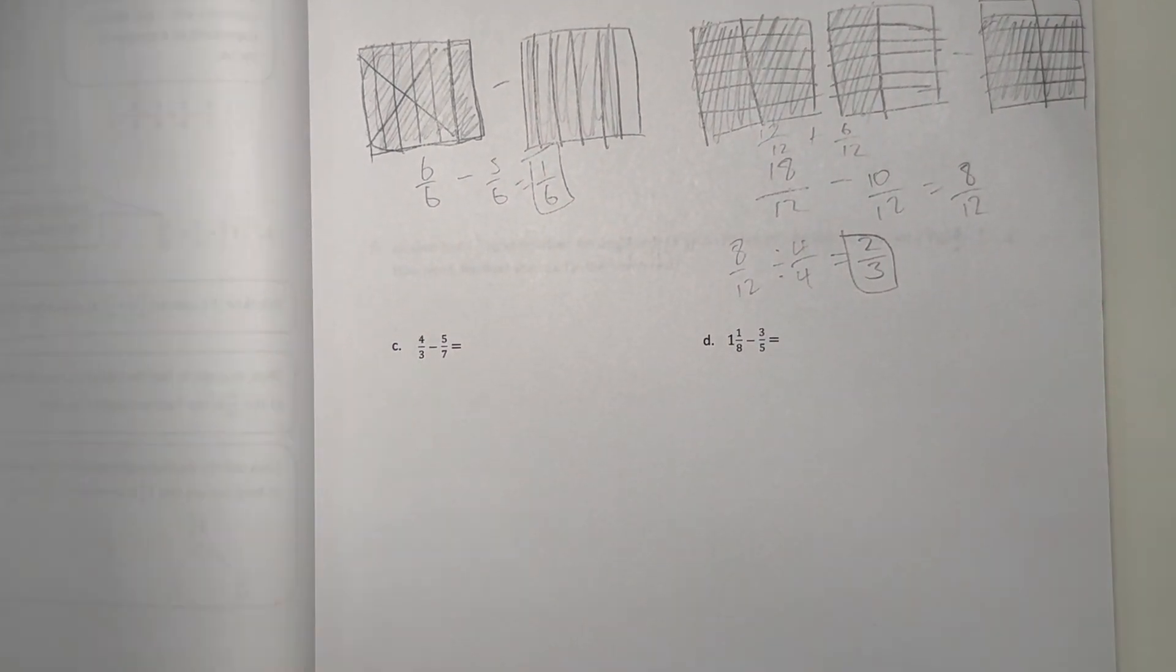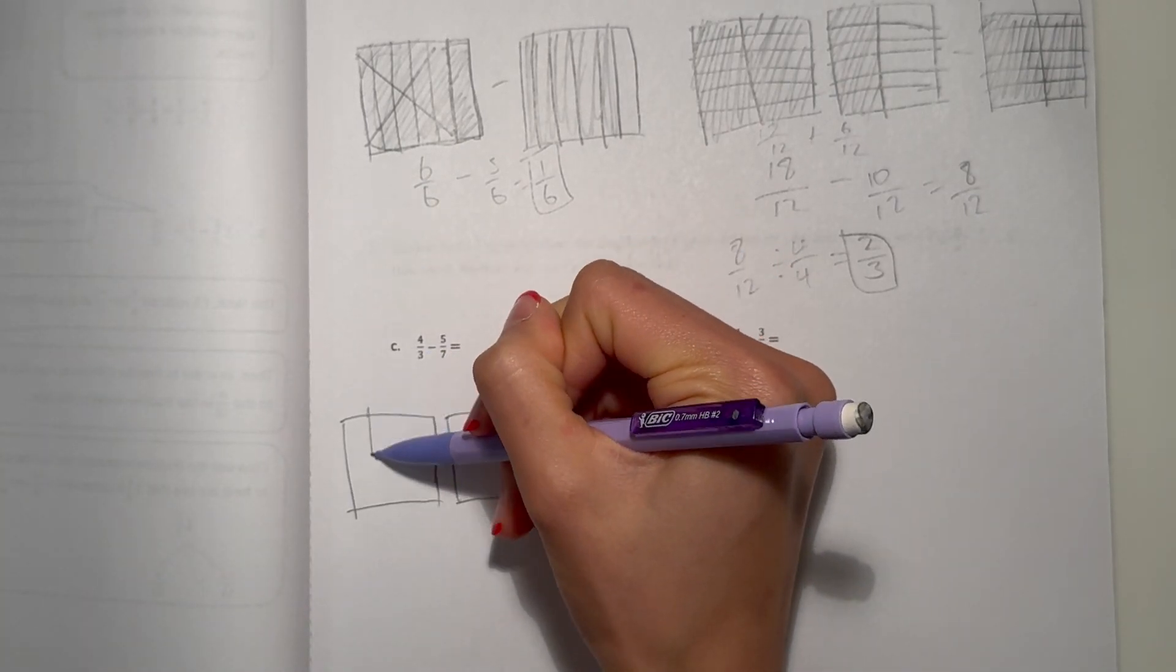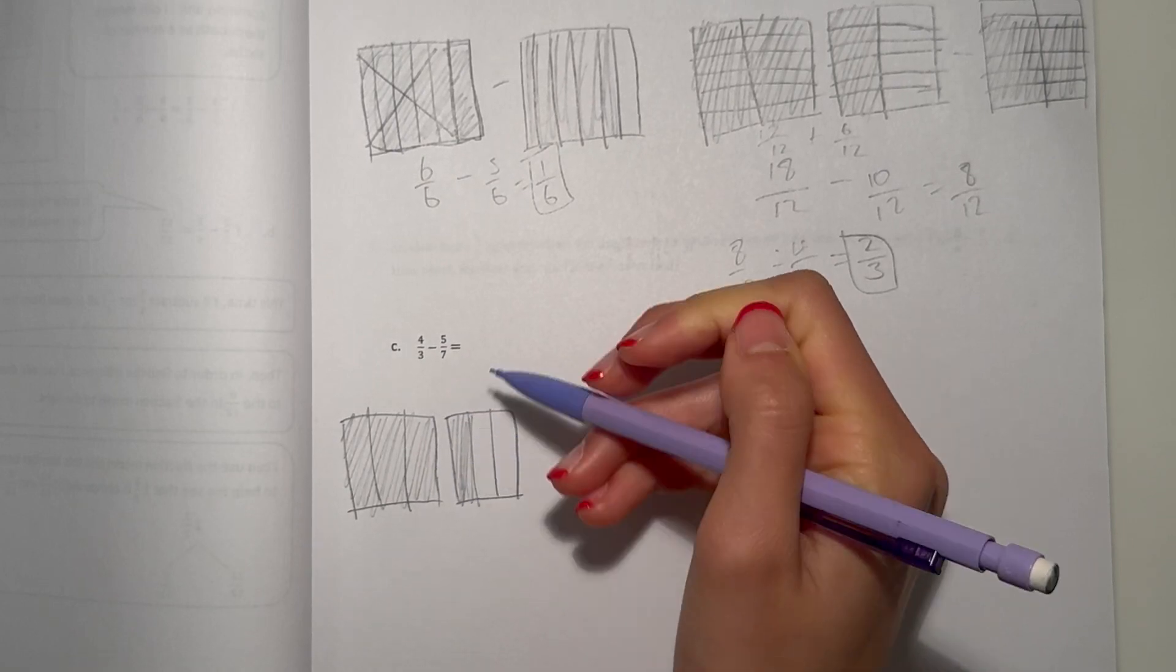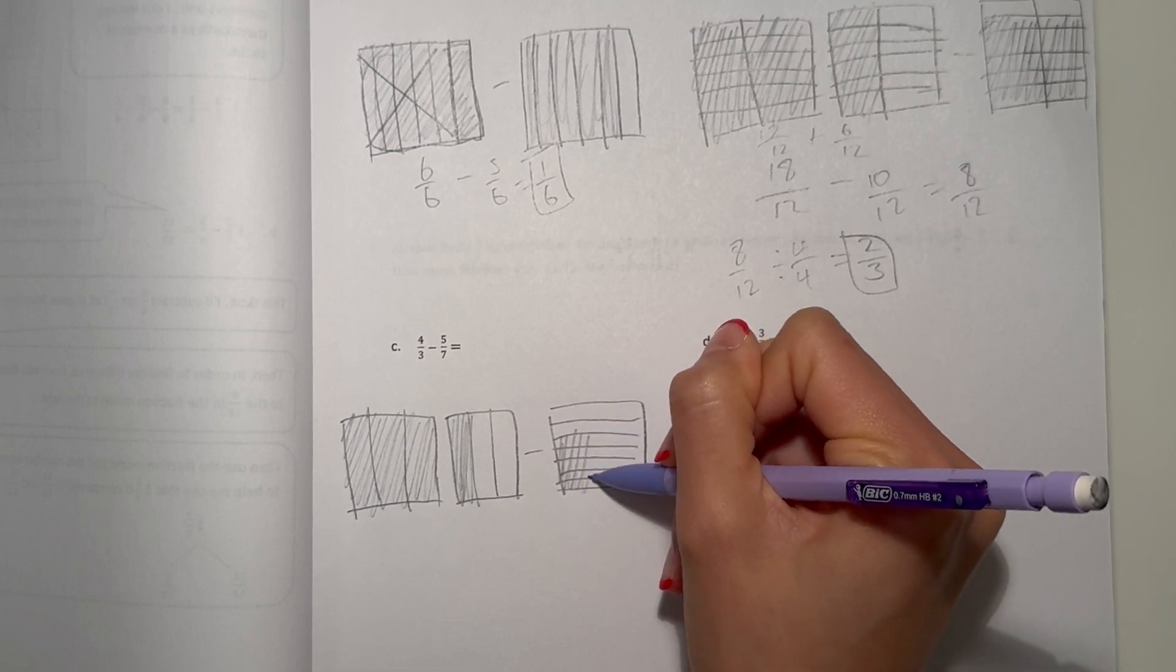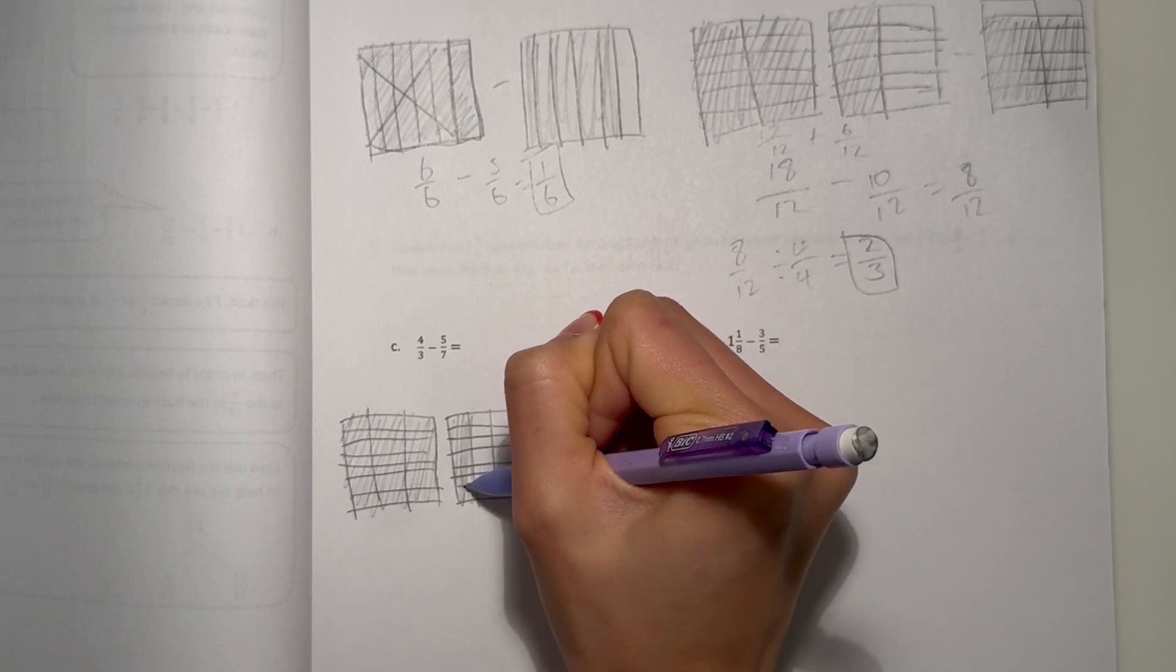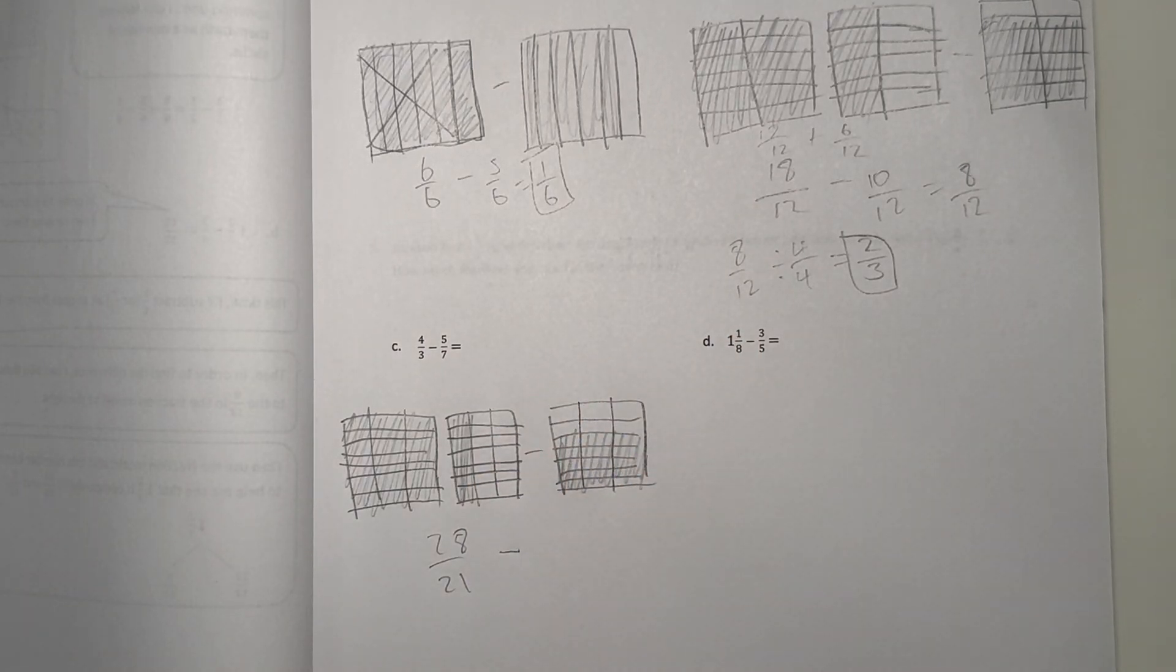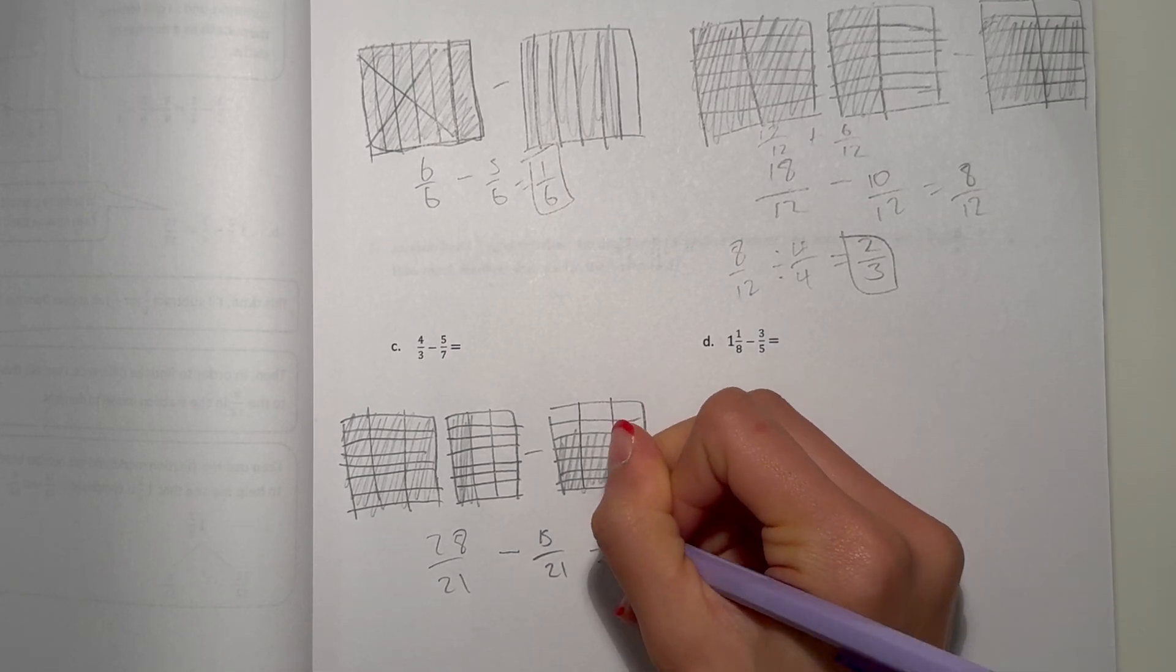Now C: 4/3 minus 5/7. 4/3, that's more than a whole, so that means we have to draw two. This is 3/3 and 4/3 would be right here. Minus 5/7. Shade this part in. Now we put thirds on top here and sevenths here. Now we have 28/21 minus 15/21, which will give us 28 minus 15 is 13/21. So that would be our final answer.